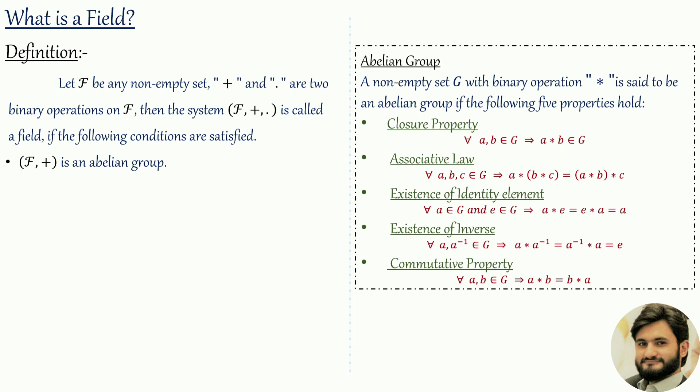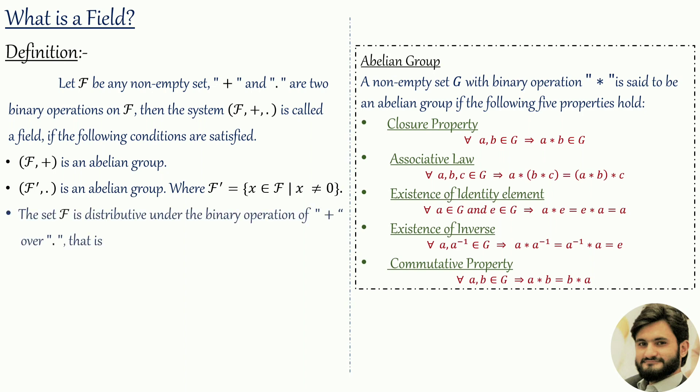The second condition of the field: f', which is the set f with the additive identity element removed — that is, f excluding zero (the addition identity element) — is an abelian group under the binary operation of multiplication. So f' is a subset of f and f is a superset of f'. The elements of f' are all elements of f except the additive identity 0.